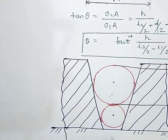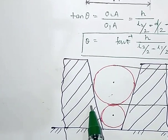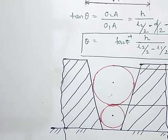Now look at this diagram. This is called as a taper ring gauge.